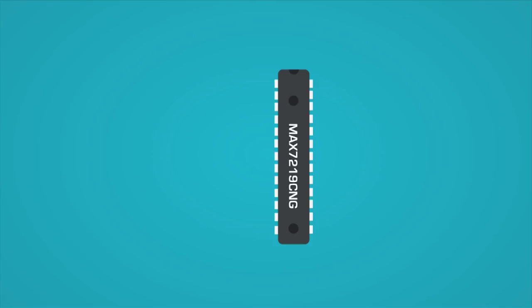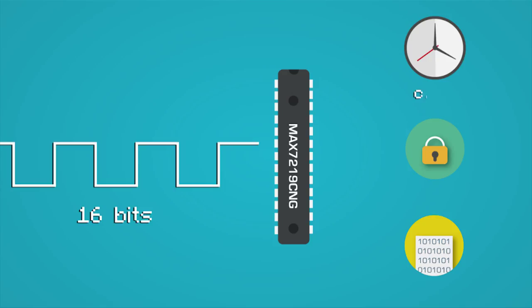The MAC7219CNG works like other shift registers such as the common 74HC595 in that you need to enter data in a serial fashion, bit by bit, with a total of 16 bits loaded at a time. Like other shift registers, it only uses 3 pins from the Arduino for data, latch, and clock.